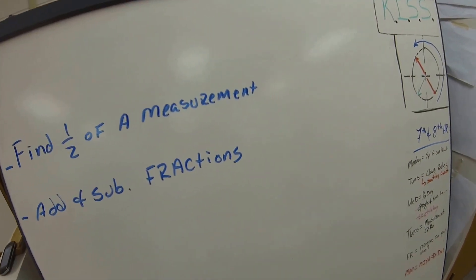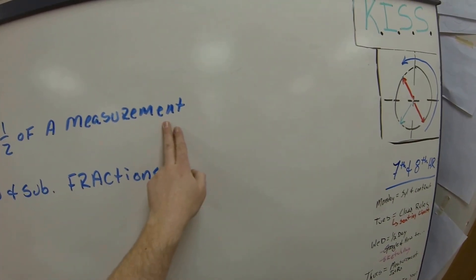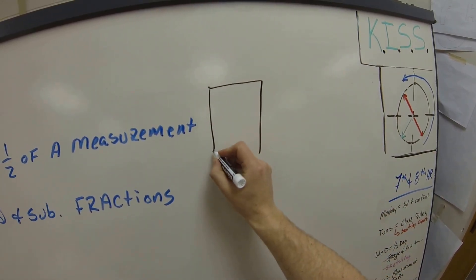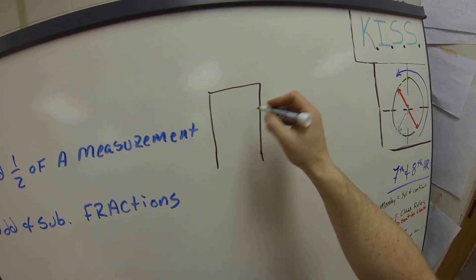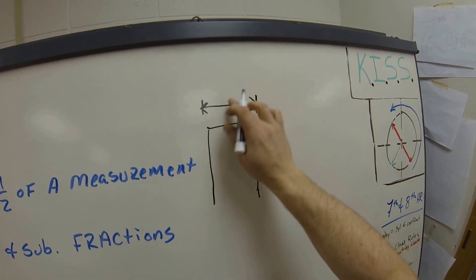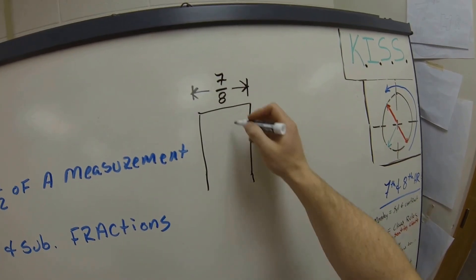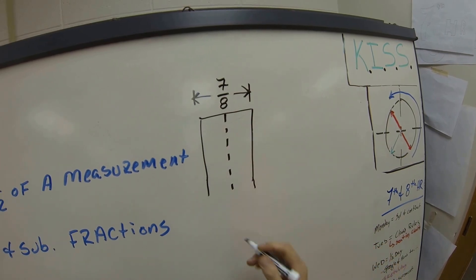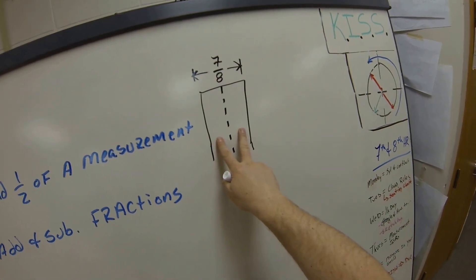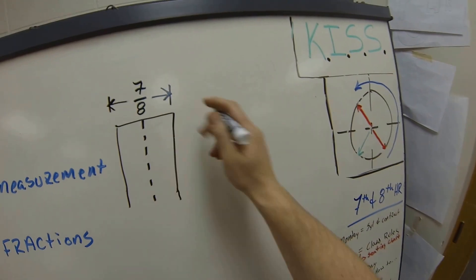To start out today, we're going to find half of a measurement. Now where could this become handy? Well, for instance, let's say we had a product and that product had a certain size, and let's say that size was 7/8 of an inch and you wanted to cut that product in half so you had two equal parts. Well, you need to know how much you would have on both sides if you were to separate or cut that in half.